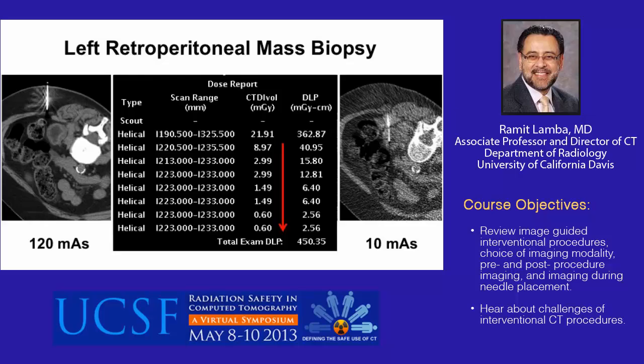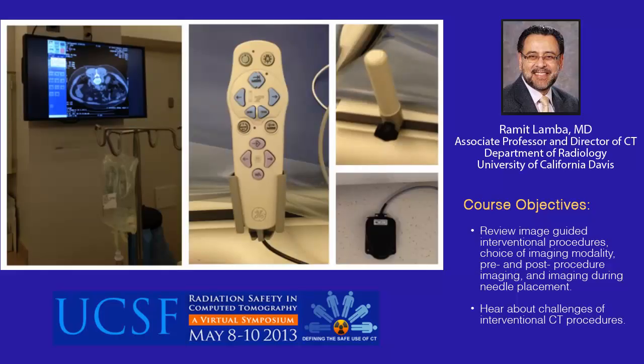Typically, if we have a well-visualized target and a cooperative patient throughout the procedure, we are able to complete the procedure in 2 to 4 seconds of fluoroscopy time. This slide shows the typical setup for CT fluoroscopy in the procedure room. We have two wall-hanging monitors, one on each side of the room. A keypad controls the table position, a fixed joystick assists in moving the CT table, and fluoroscopy can be done using the foot pedal.